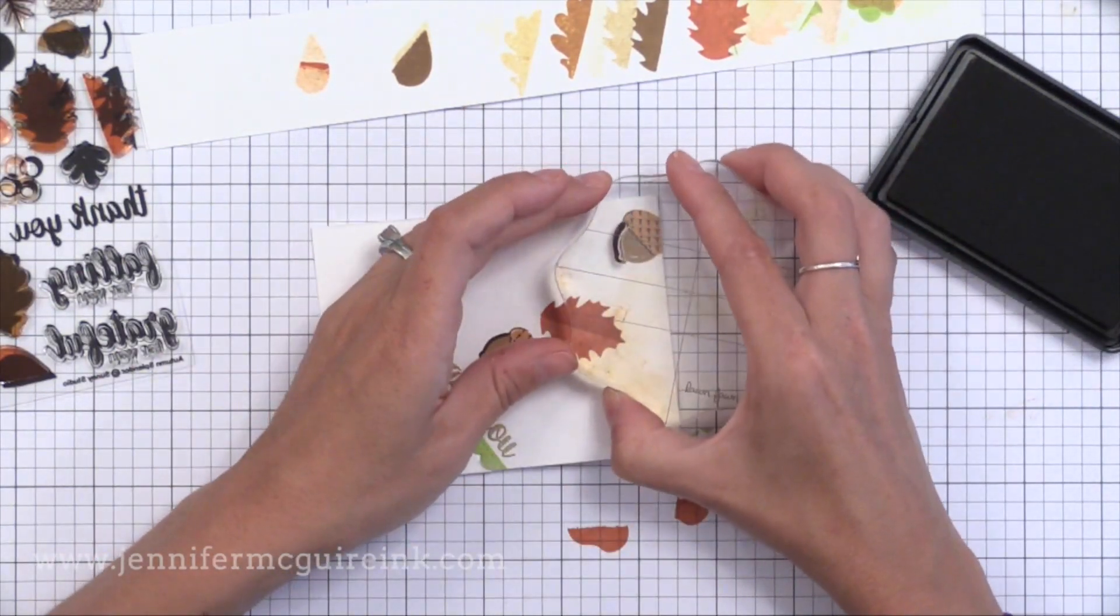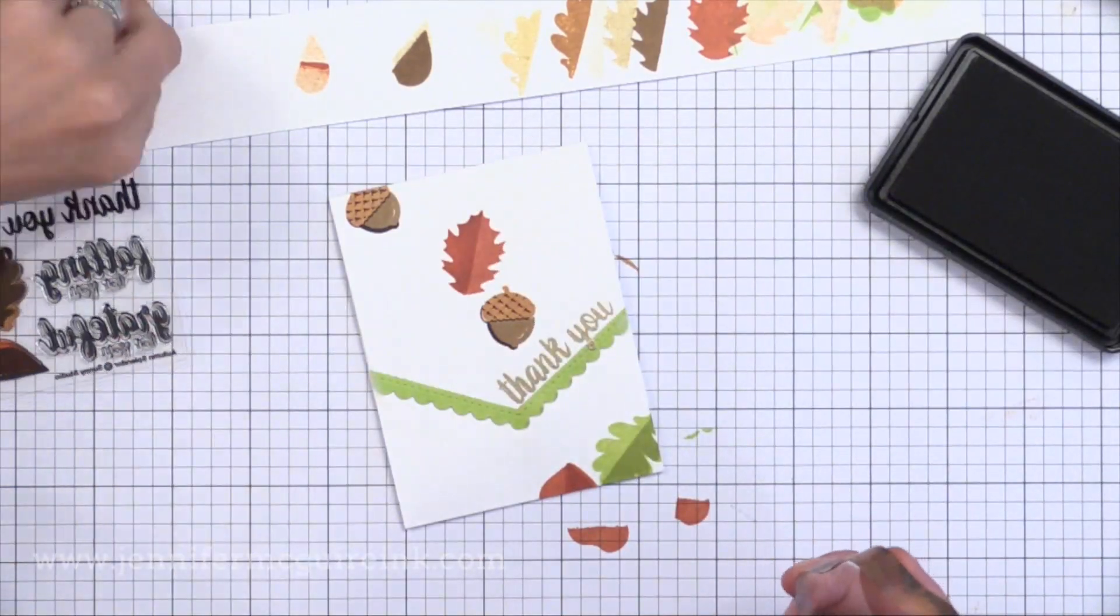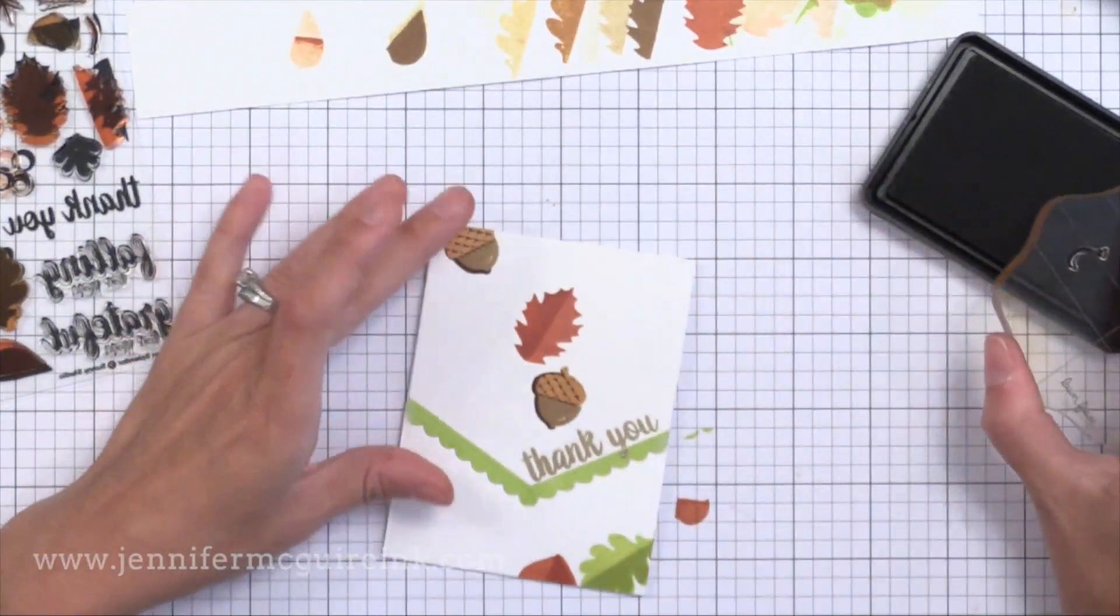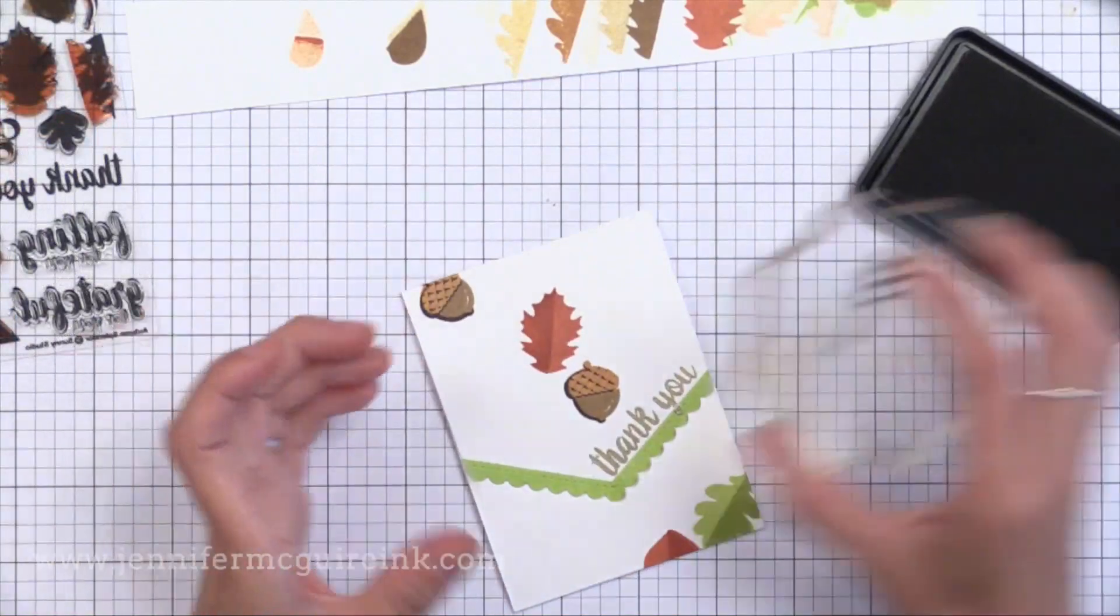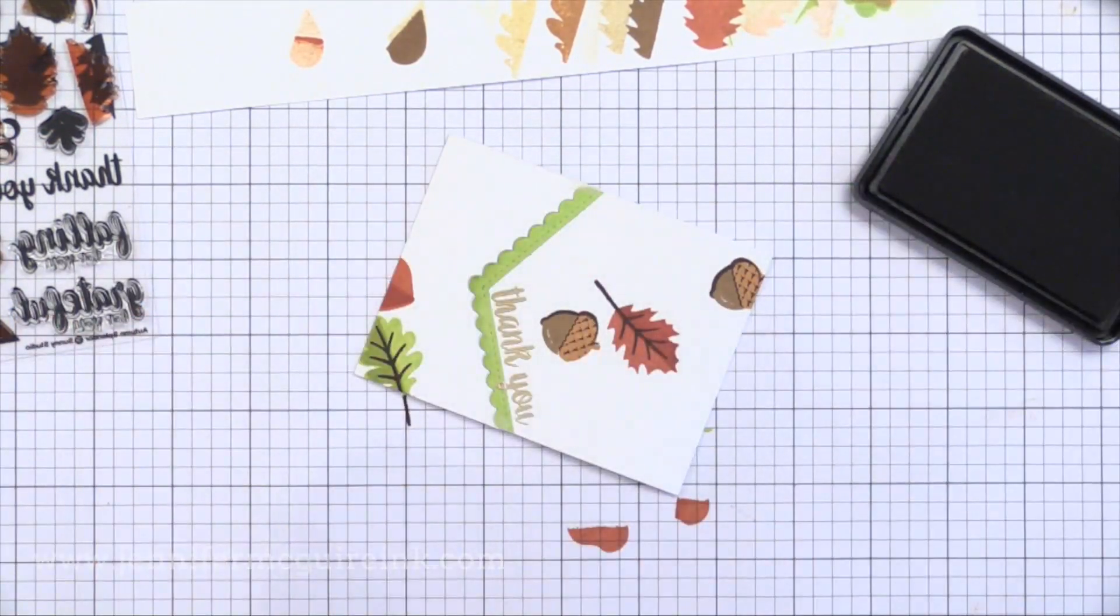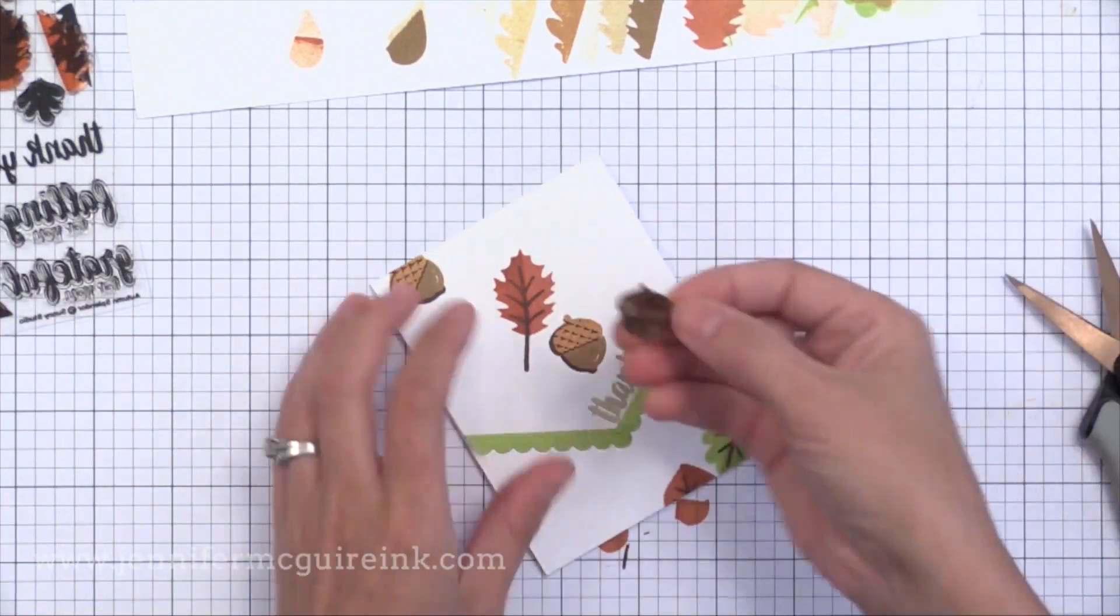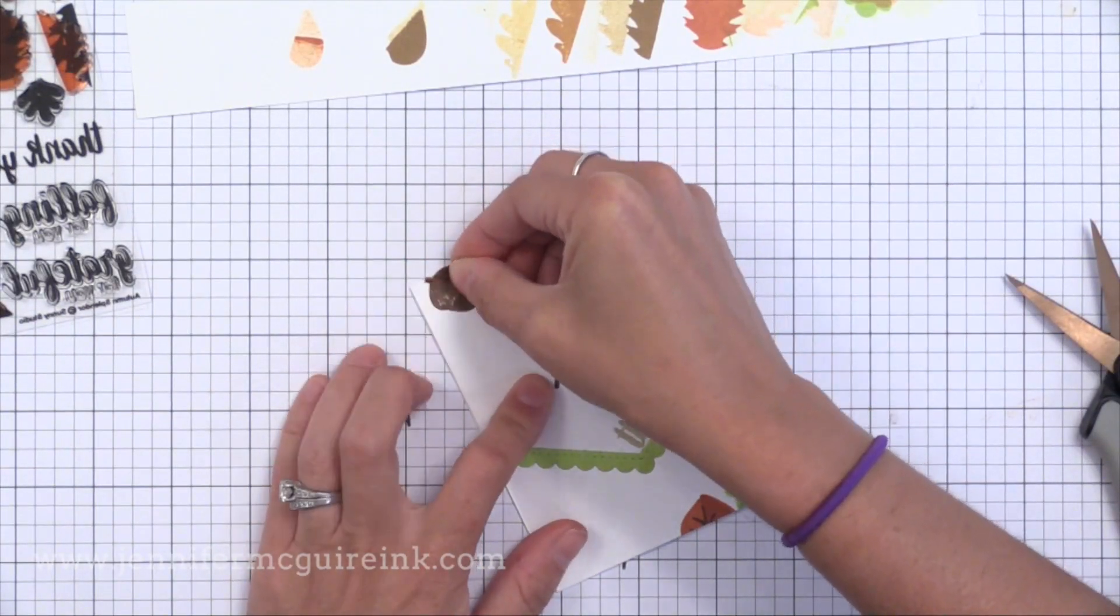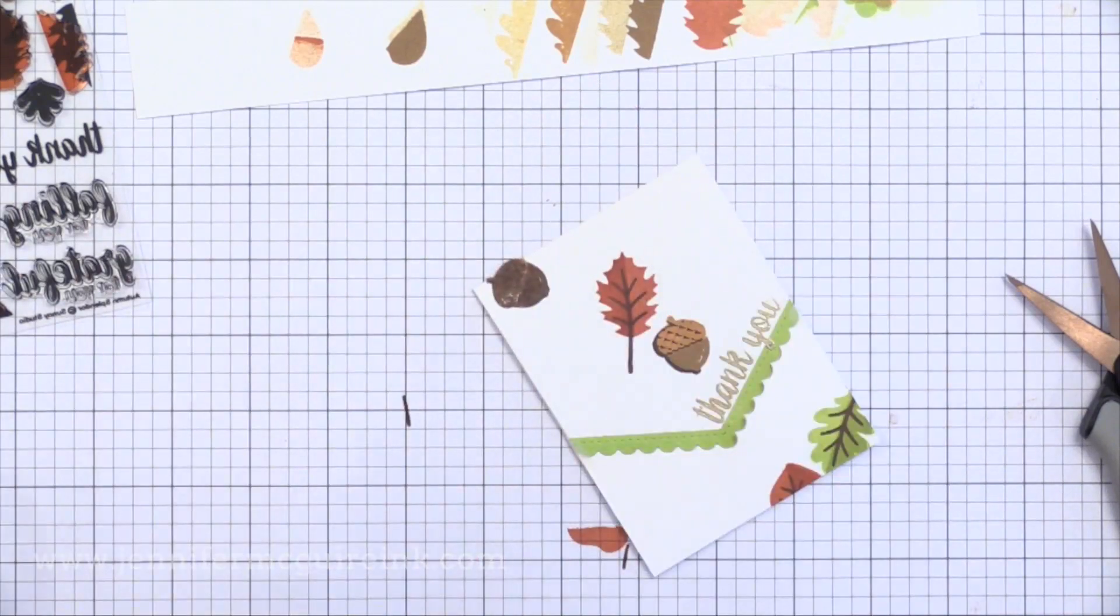So here I'm just stamping some of the details on the acorns. These acorns are absolutely adorable in this set. The key to lining up the stamp layering is getting your head over the image. That's why I kind of cut out part of the video because I don't want you to look at the top of my head for all this stamping. Here's another tip for you.